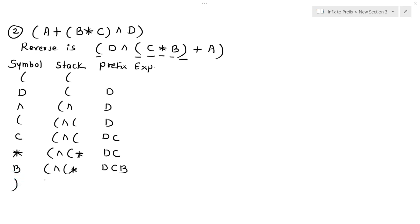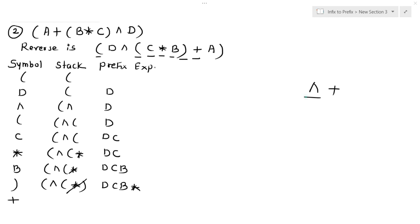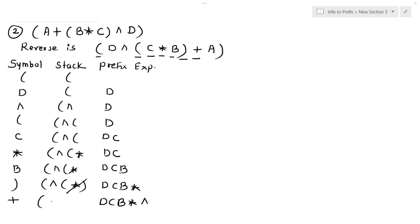Now a right parenthesis arrives. The stack has: left parenthesis, exponential, left parenthesis, multiplication. Multiplication is between the two parentheses, so it gets cancelled and inserted into the prefix expression. Expression is now: d, c, b, multiplication. Next is plus — since exponential has higher priority, we must pop exponential before inserting plus. The stack now has: left parenthesis, plus. Expression: d, c, b, multiplication, exponential.